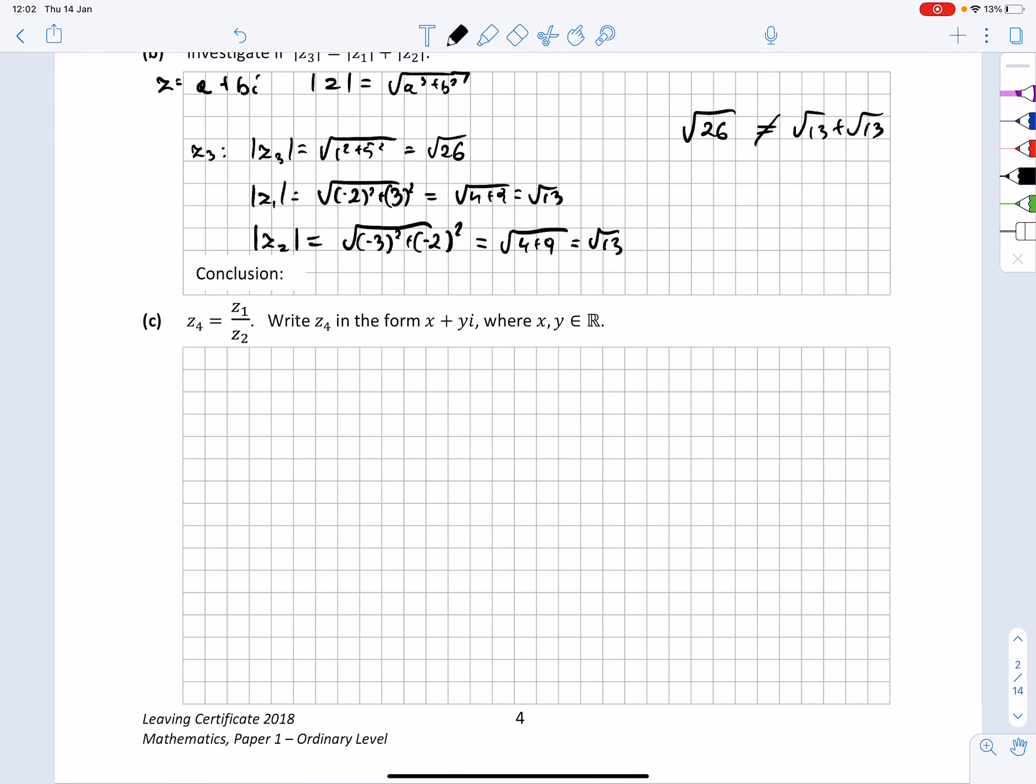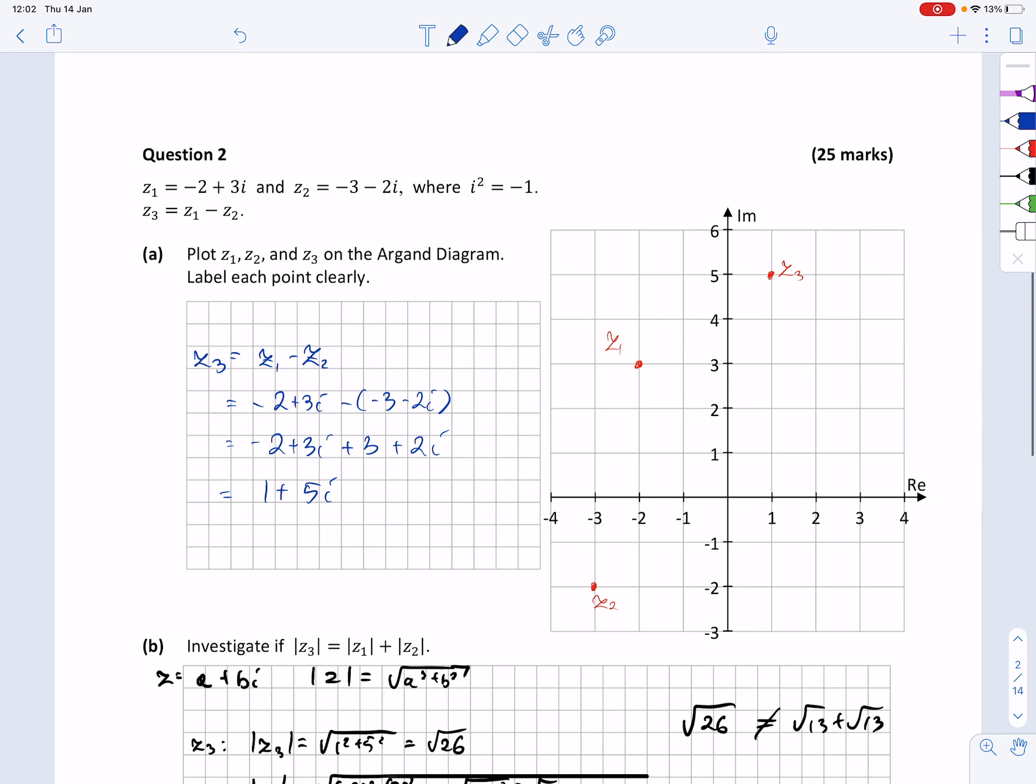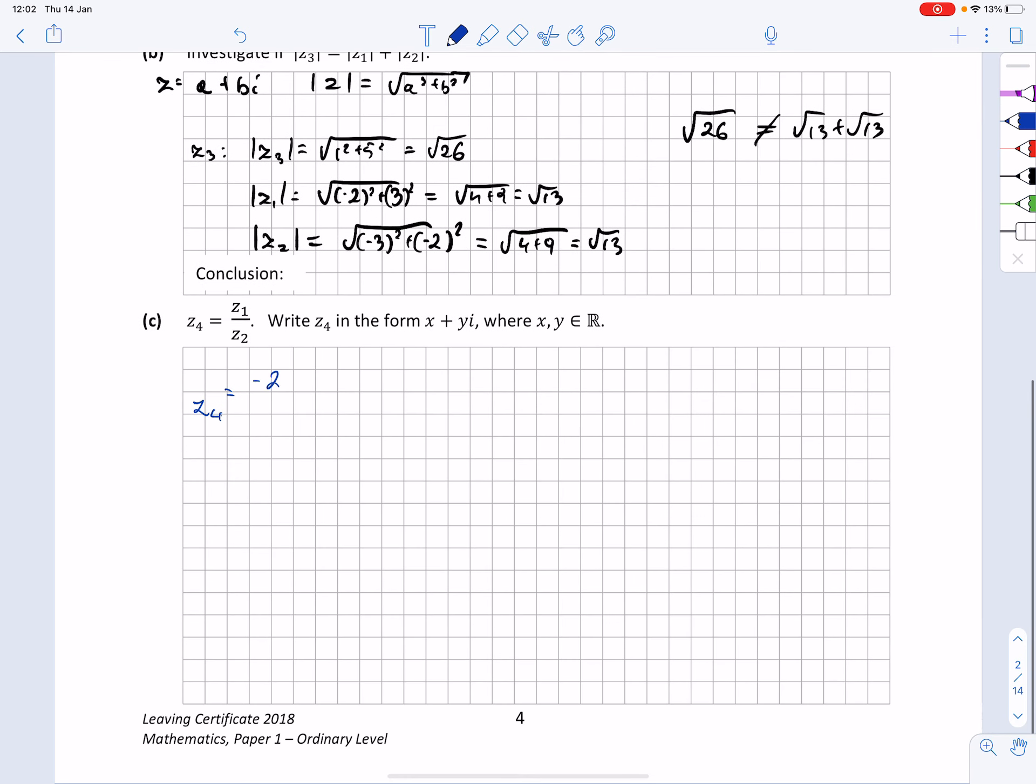In the next question, we are asked to carry out a division of two complex numbers, so let's do that. Z4 equals Z1 divided by Z2, so Z4 equals Z1, I'm going to substitute minus 2 plus 3i, and for Z2, I'm substituting minus 3 minus 2i.